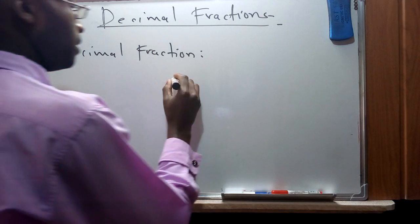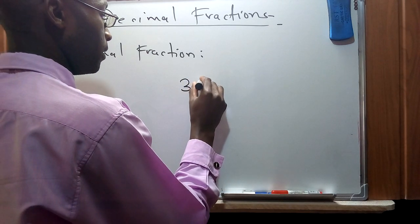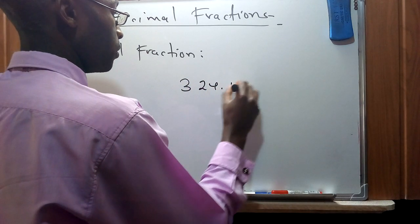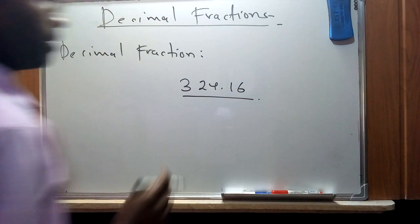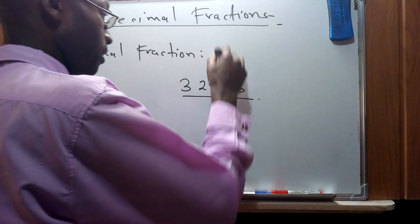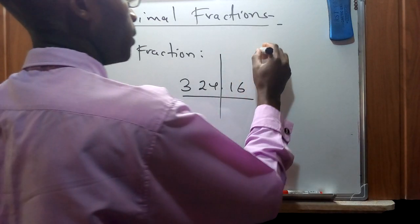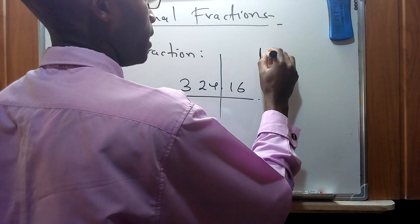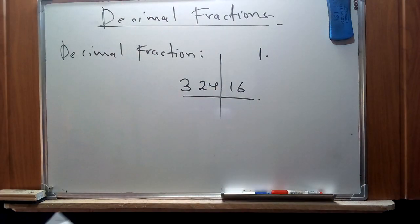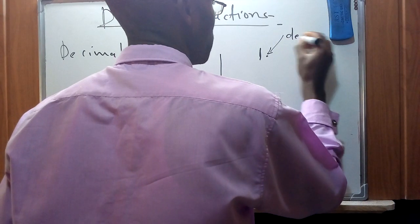To represent a decimal fraction, suppose we have a number like 324.16. This number can be regarded as a decimal fraction because it has a unity value — a unit is 1 — and there is a period point that we refer to as a decimal point.